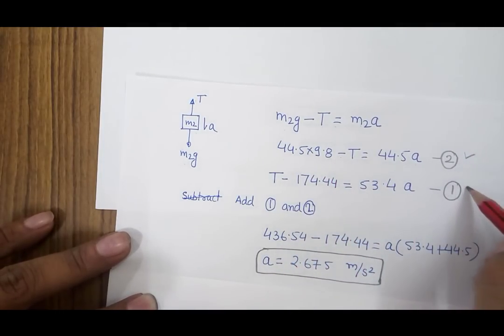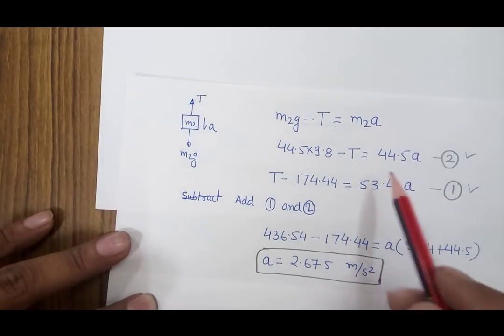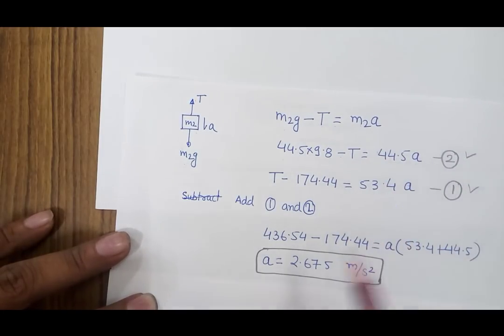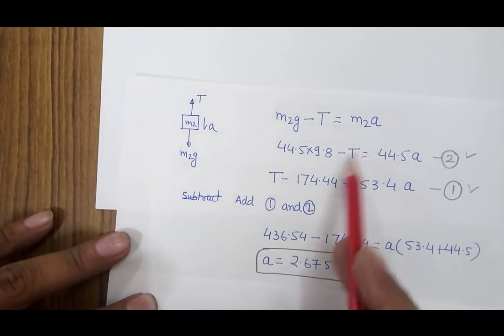Adding the two equations, T cancels out and we finally obtain the value of acceleration as 2.675 meters per second squared.